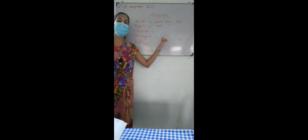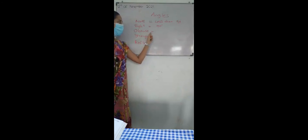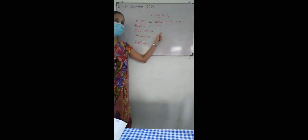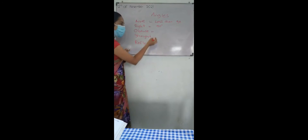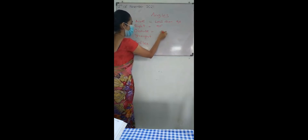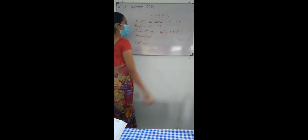What should be the magnitude of an obtuse angle? It should be more than 90. Very good. It should be more than 90, but it should be less than 180 degrees. It means the magnitude of an obtuse angle should be between 90 degrees and 180 degrees. Clear? Yes. Understood.